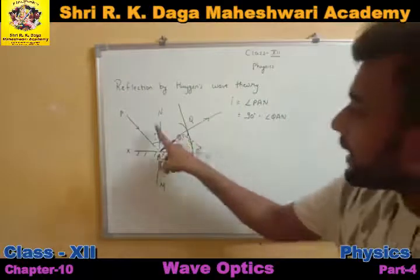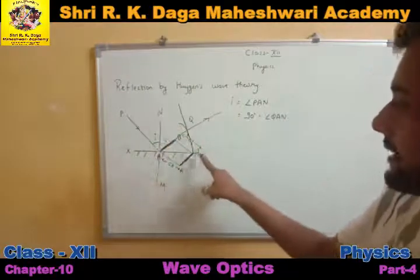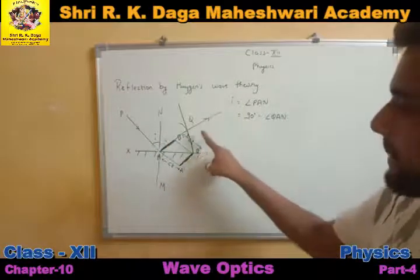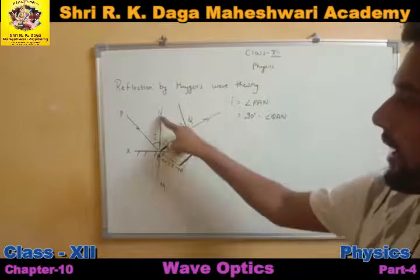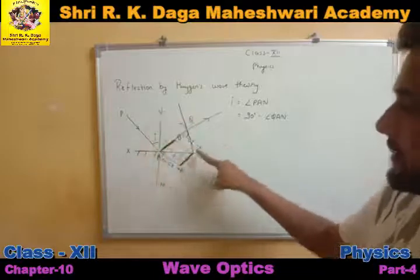Now if we talk about 90 minus QAN — when QAN is subtracted from 90, what remains? The remaining angle is QAB'. Looking at the figure, angle NAB is 90 degrees, so when QAN is removed from 90, what remains is QAB'.